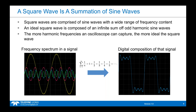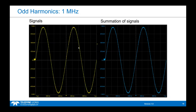I want to go over a quick example of how odd harmonics sum up to create a more ideal square wave. On this screen we're looking at a dual-grid view of a Teledyne LeCroy oscilloscope — specifically an HD06000. In the left grid we're looking at the odd harmonic sine waves forming the frequency spectrum, and on the right grid we'll see the summation of those sine waves. The first odd harmonic is 1 MHz, which will be the fundamental frequency with the biggest amplitude.